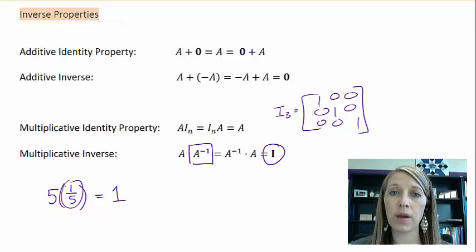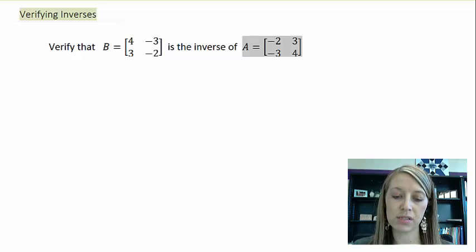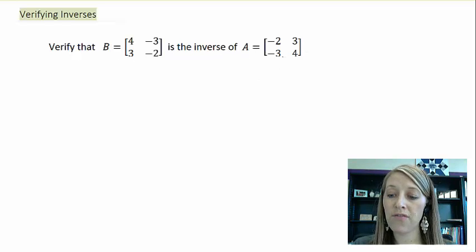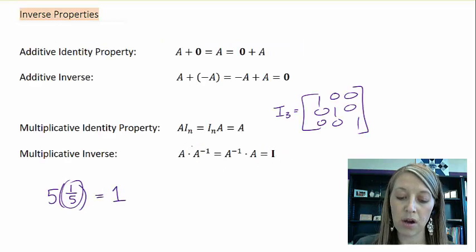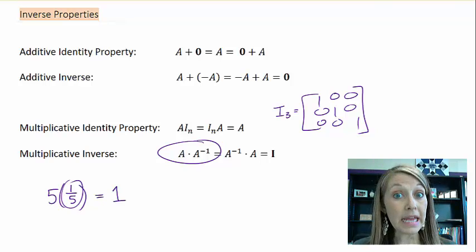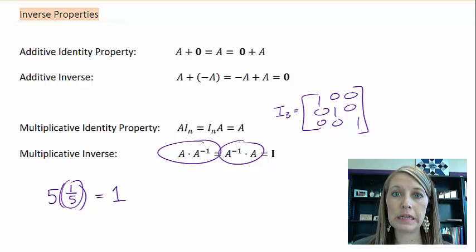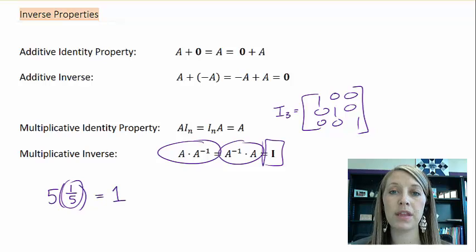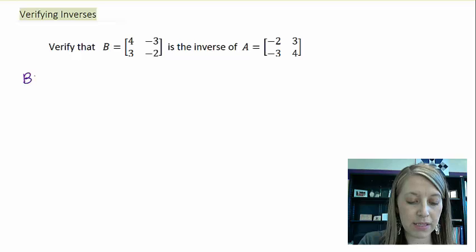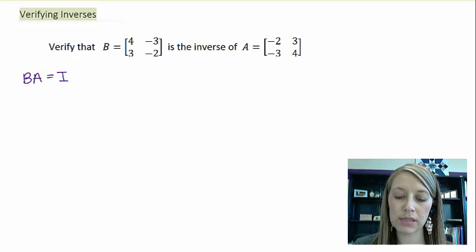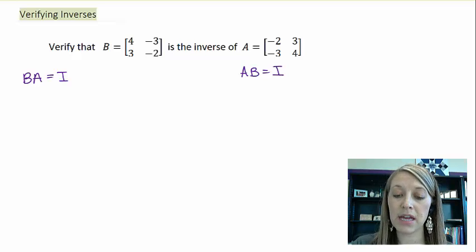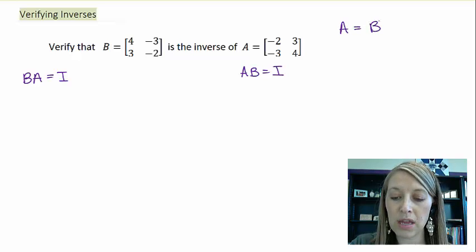Before we go into how to find it, let's verify some inverses. We want to verify that if B is a given matrix, its inverse is another given matrix. To verify it, we need to work the property: multiply A times its inverse and also do it the opposite way, because matrix multiplication is not commutative. I have to take A times its inverse and also take the inverse times A to confirm I get the identity matrix. So I need to take B times A and A times B — if both give the identity matrix, then A is the inverse of B.